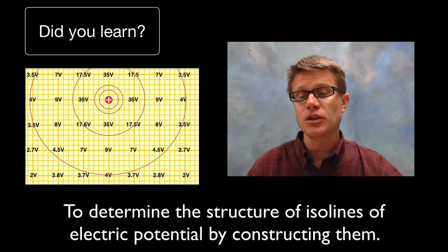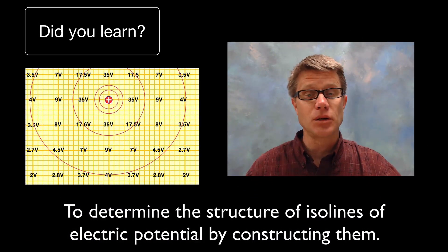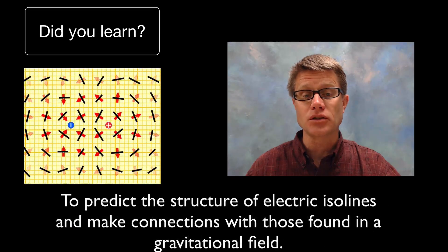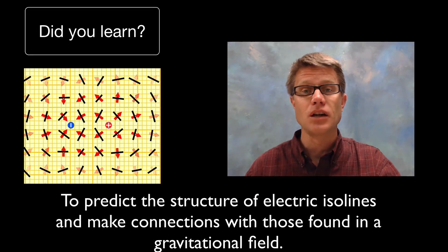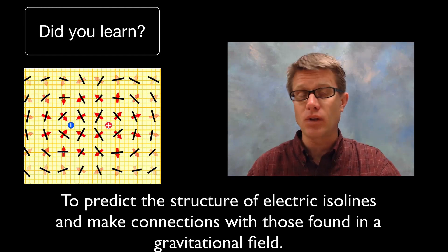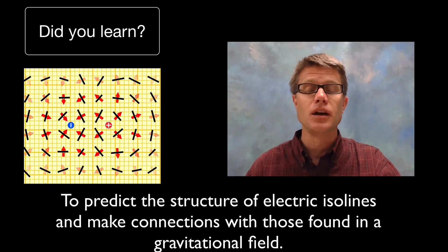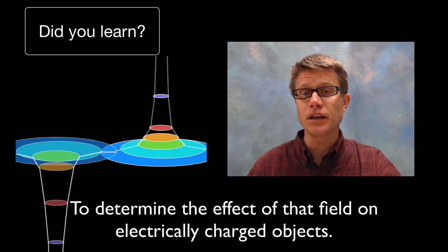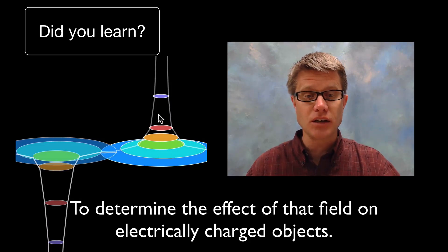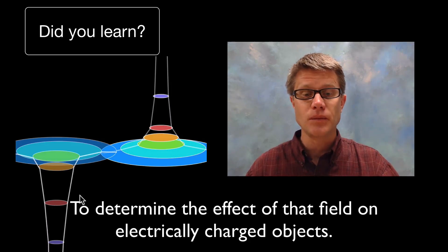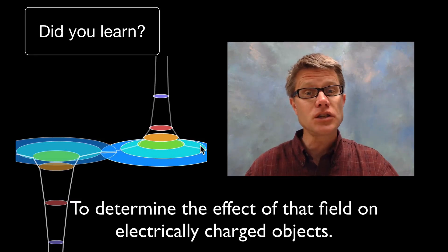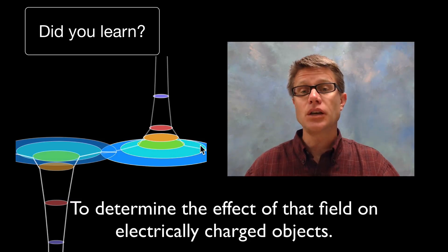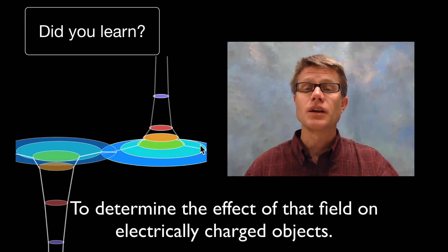So did you learn to determine the structure of iso lines? Again, they are going to be lines of equal electric potential. Did you learn to predict the structure of those equipotential lines if you are given the electric field? Always remember that we are drawing perpendicular lines. And do you know how that is going to affect a charge? If we put a charge inside here it is clearly going to move in that direction, but if we move along that equipotential line, since we are not changing the electric potential, we are not doing any work. I hope that was helpful.